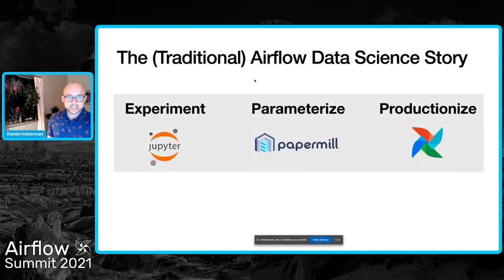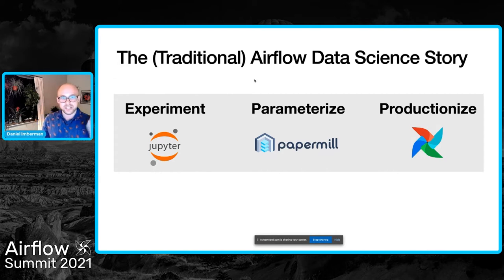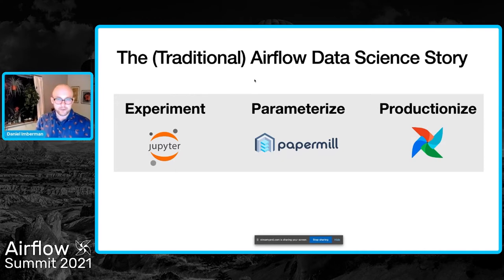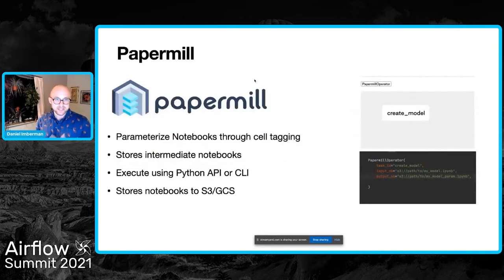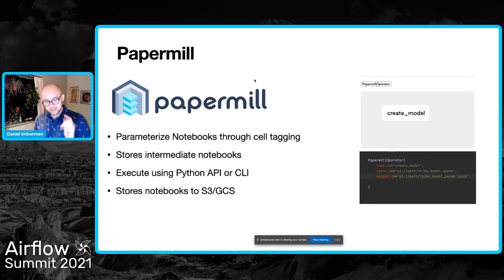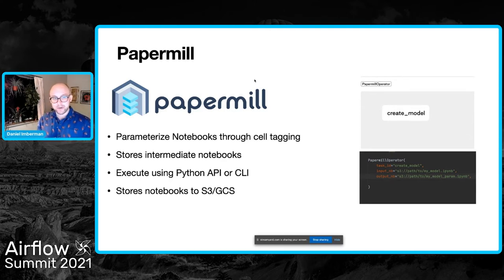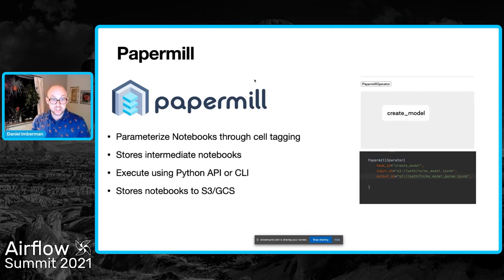Traditionally, at last year's Airflow Summit, I discussed a Jupyter to production model, which was essentially to experiment with Jupyter, parameterize with PaperMill, and then productionize on Airflow. For those who don't know, PaperMill is a system that allows you to parameterize notebooks through cell tagging. You can go through the notebook, set that you want to inject parameters at a specific cell, and PaperMill will inject those parameters and run the notebook. It executes using a Python API, and it stores those notebooks in S3 or GCS so that you can go back and see what happened in historical runs.